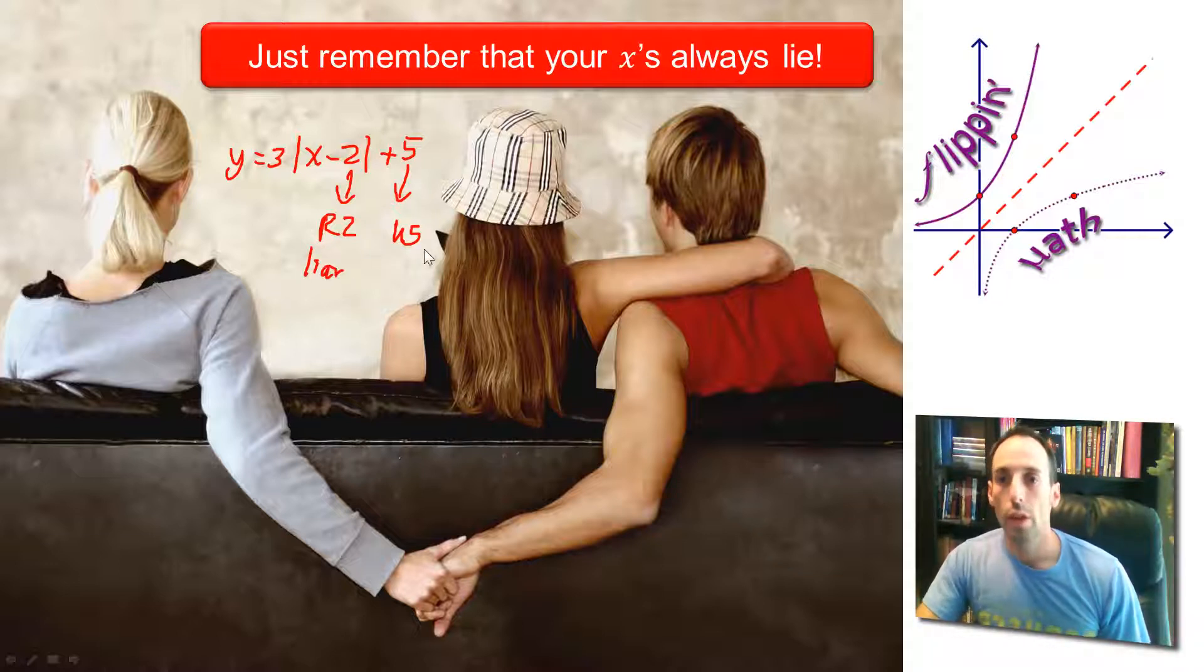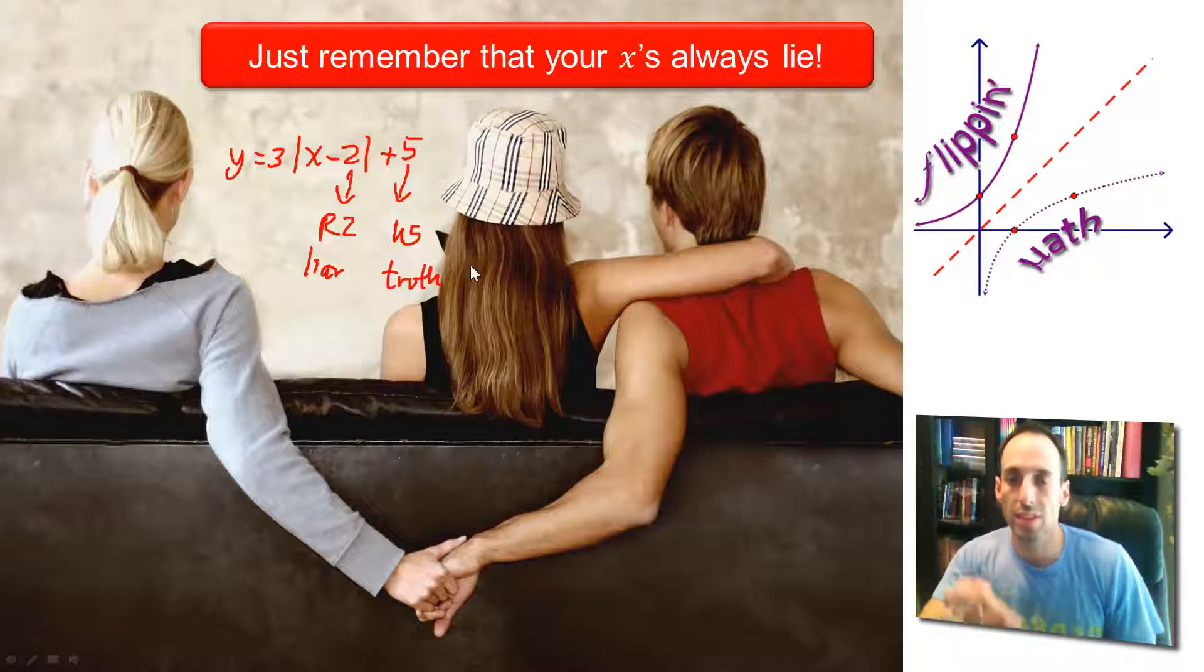So the x's, that's a liar. The y's, they're telling the truth. That's an easy way for you to distinguish these two.